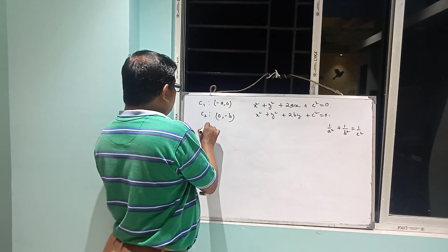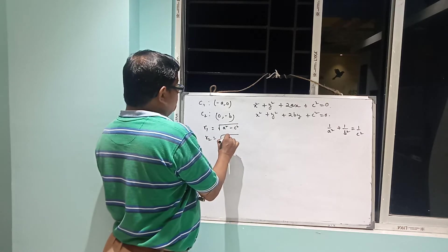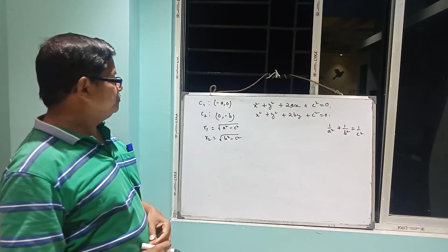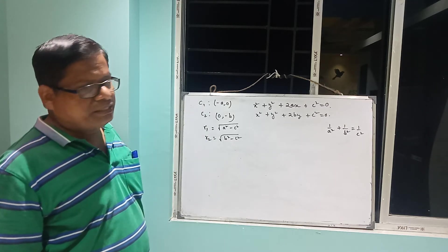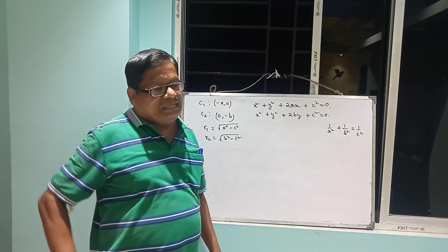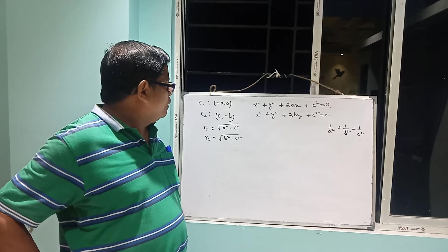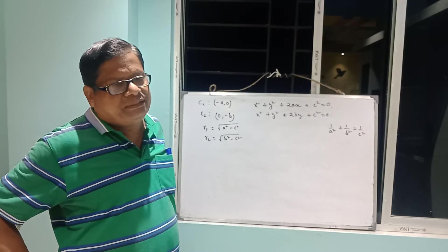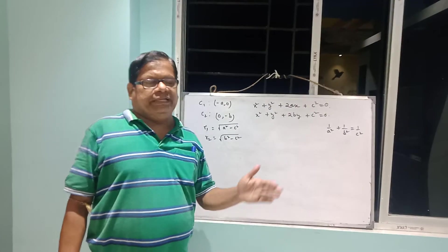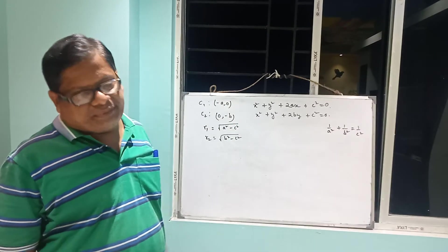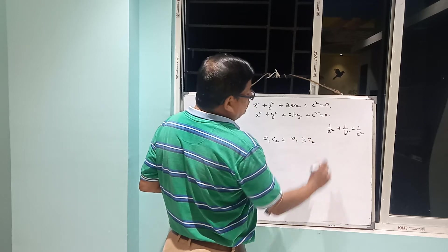Since only 'touches each other' is given (not specifying external or internal), we write: distance between centers C₁C₂ = r₁ ± r₂. The distance C₁C₂ = √(a² + b²). So √(a² + b²) = √(a² − c²) ± √(b² − c²).